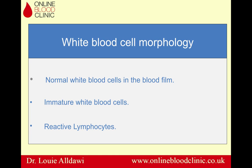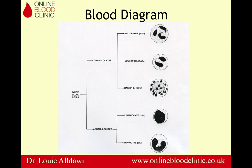We will start by doing a quick review of white blood cell morphology. We will review the normal white blood cells in the blood film and show you how to identify immature white blood cells and reactive lymphocytes. White blood cells are divided into granulocytes and agranulocytes. Granulocytes are typically neutrophils, eosinophils, and basophils. Agranulocytes are divided into lymphocytes and monocytes.